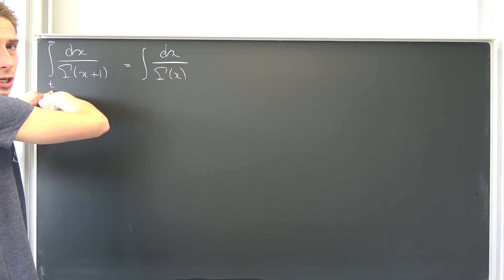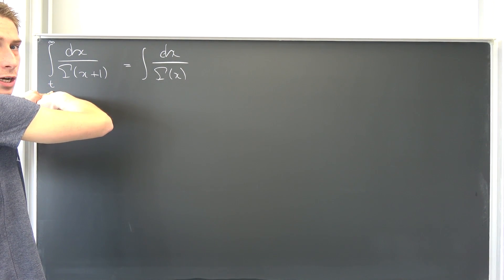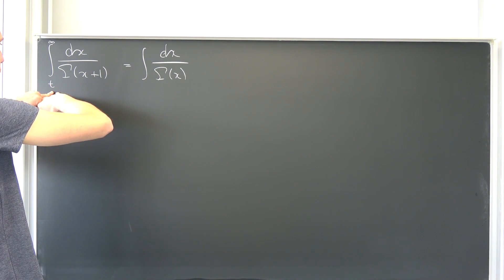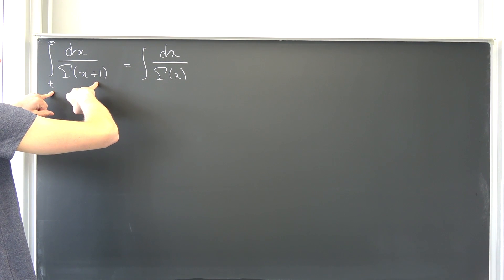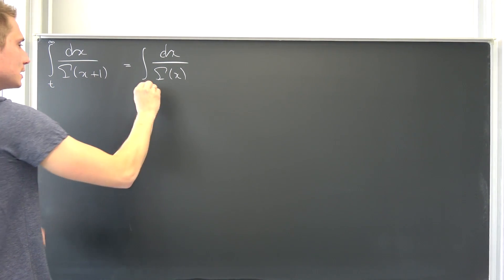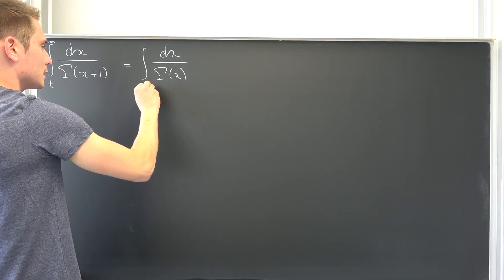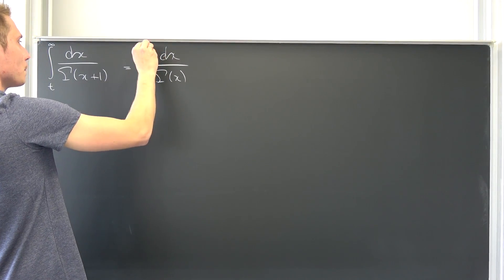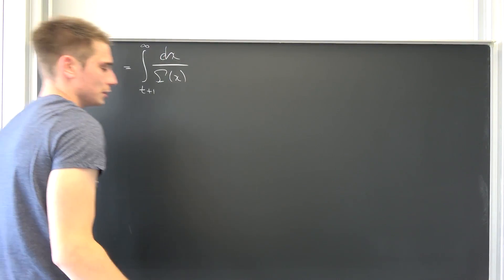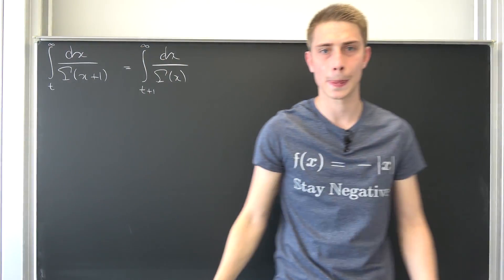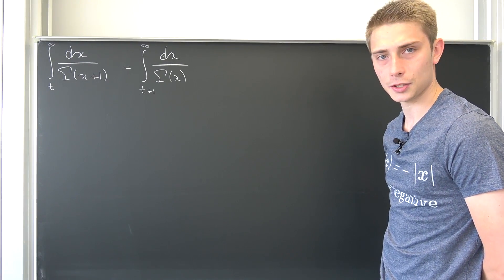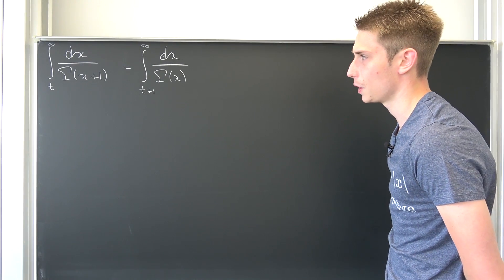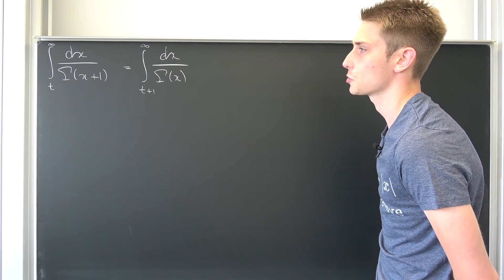How does the lower bound now behave? Well, it's simply going to be: if z is x+1 and we plug t in here, it's going to be t+1 to infinity. If I'm not mistaken, I hope I am correct on this one.